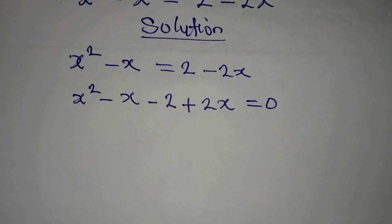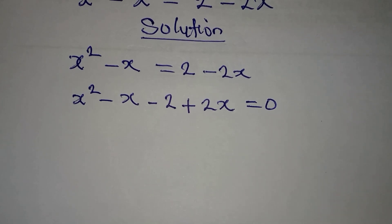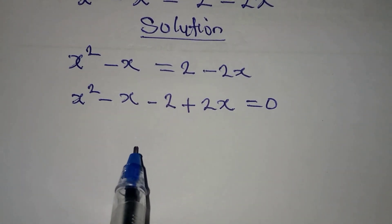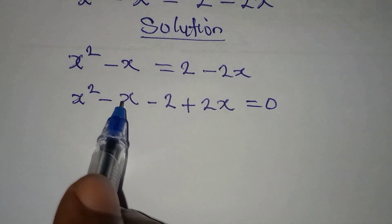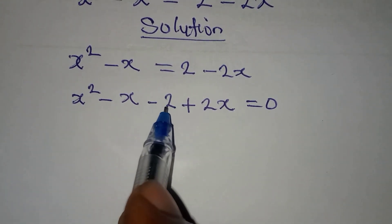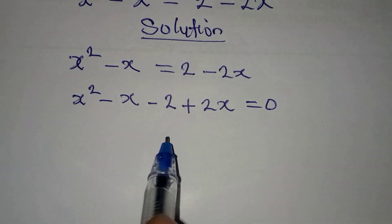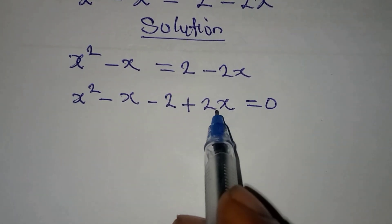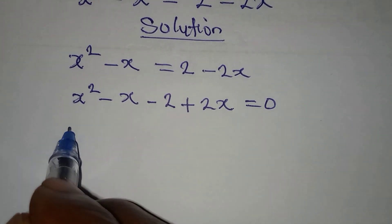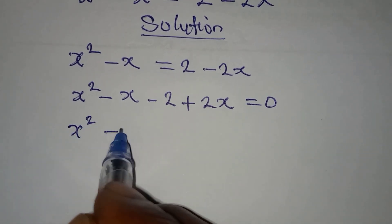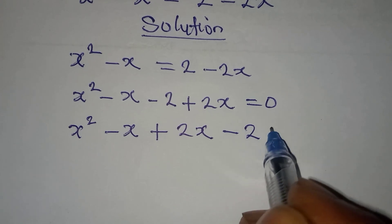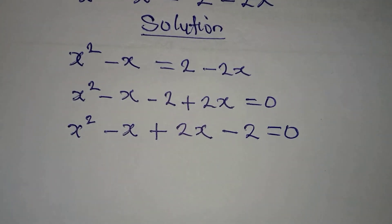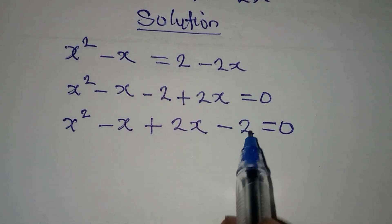From here, I want us to turn this around. Why are we turning it around? Because we are having x and a constant in the middle. This is supposed to be a quadratic equation — the constant is in the middle, so we have to bring 2x to this place. So we have x squared minus x, then plus 2x minus 2, equals 0. The constant is now where it should be.